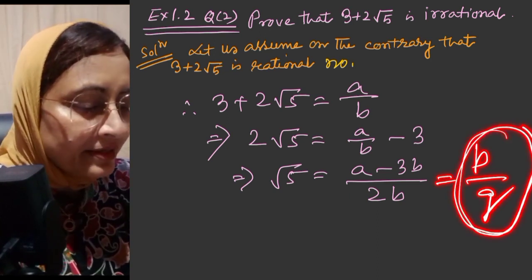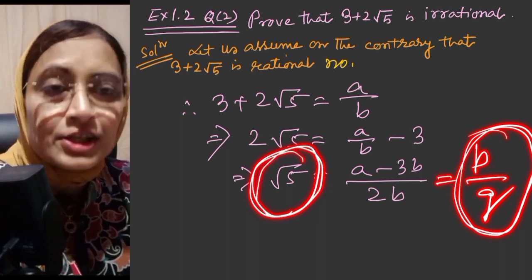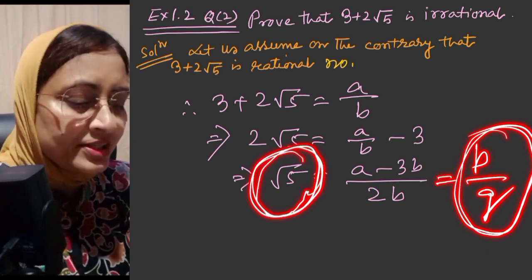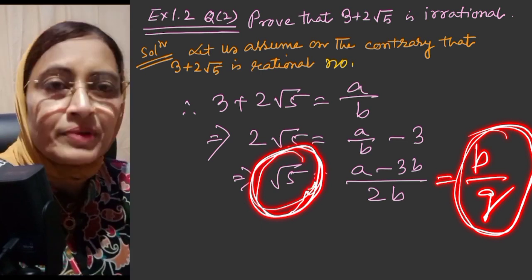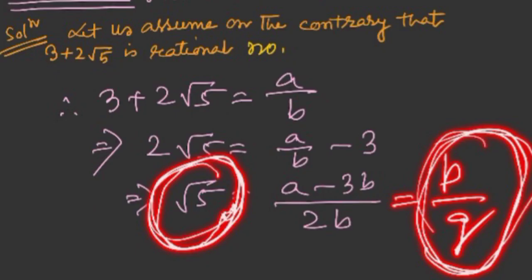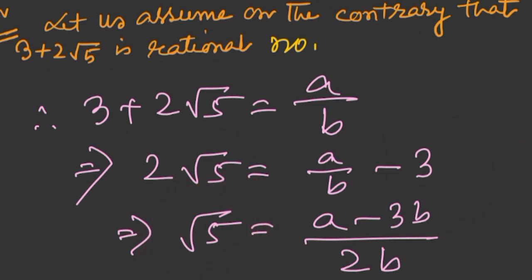But root 5 is an irrational number — root 5 cannot be written in P by Q format. This contradicts the fact that root 5 is irrational. So our assumption that 3 plus 2 root 5 is a rational number is incorrect.